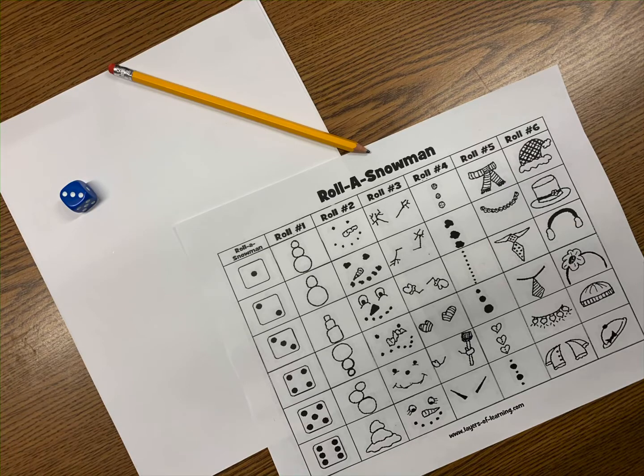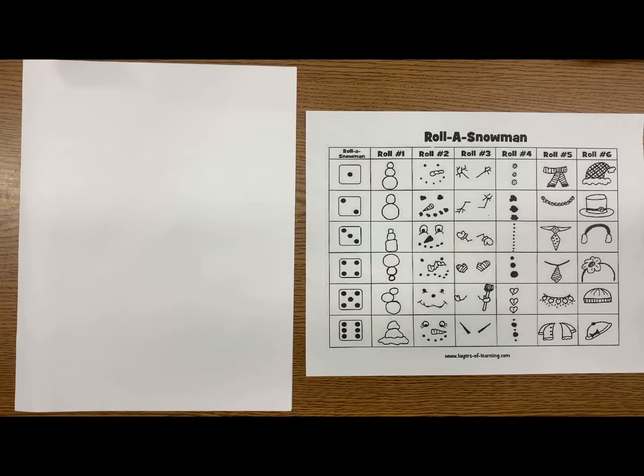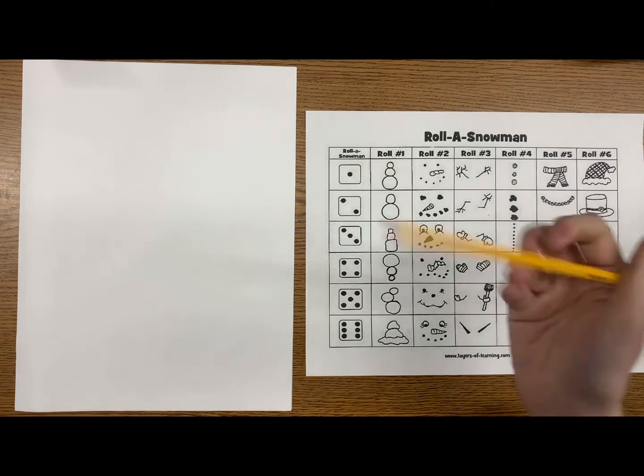To play our Roll a Snowman game, you're going to need something to write with. I usually just like a pencil and paper so I can go back to erase, but a dry erase board would work as well.